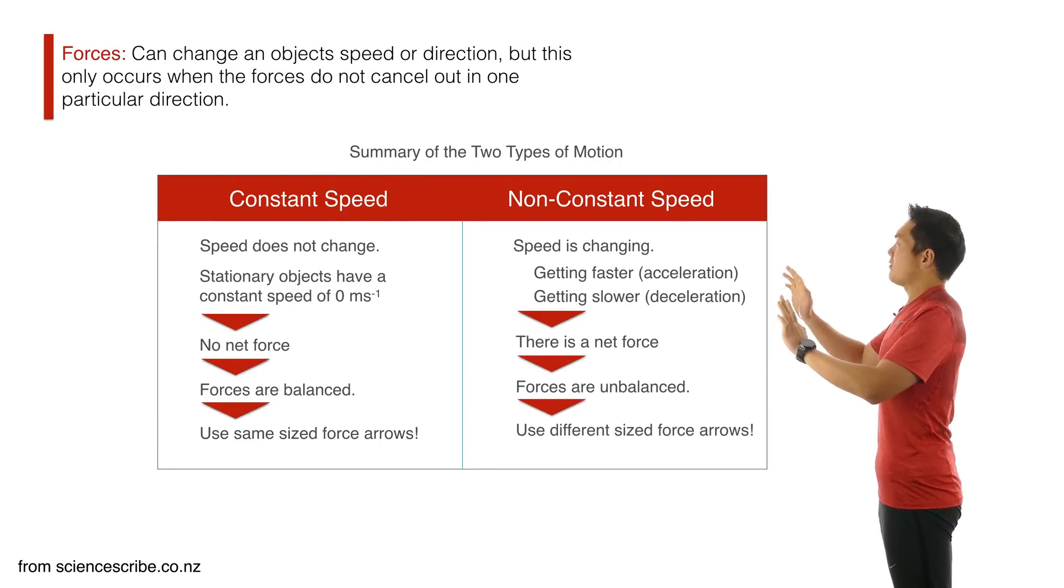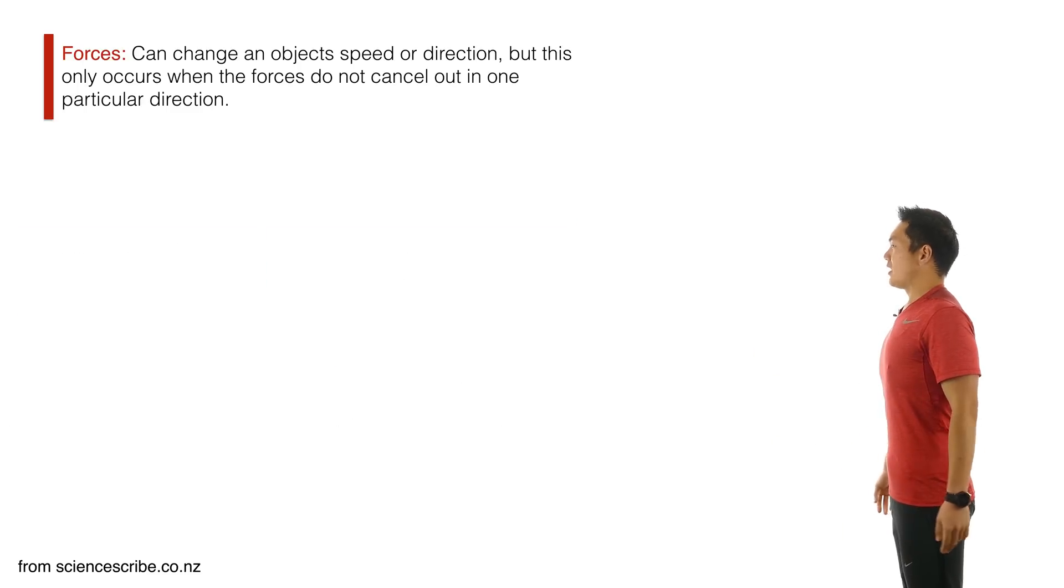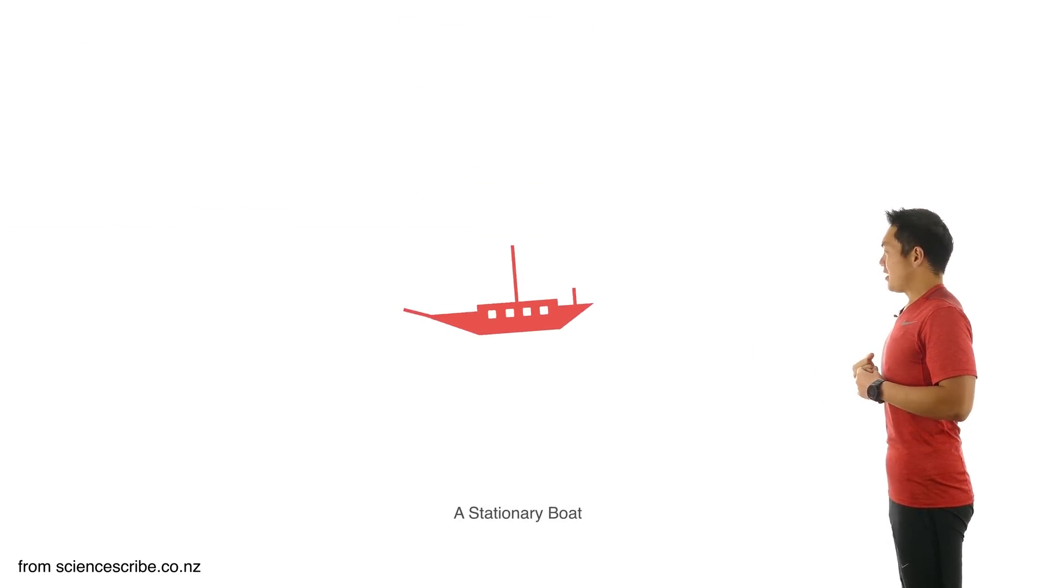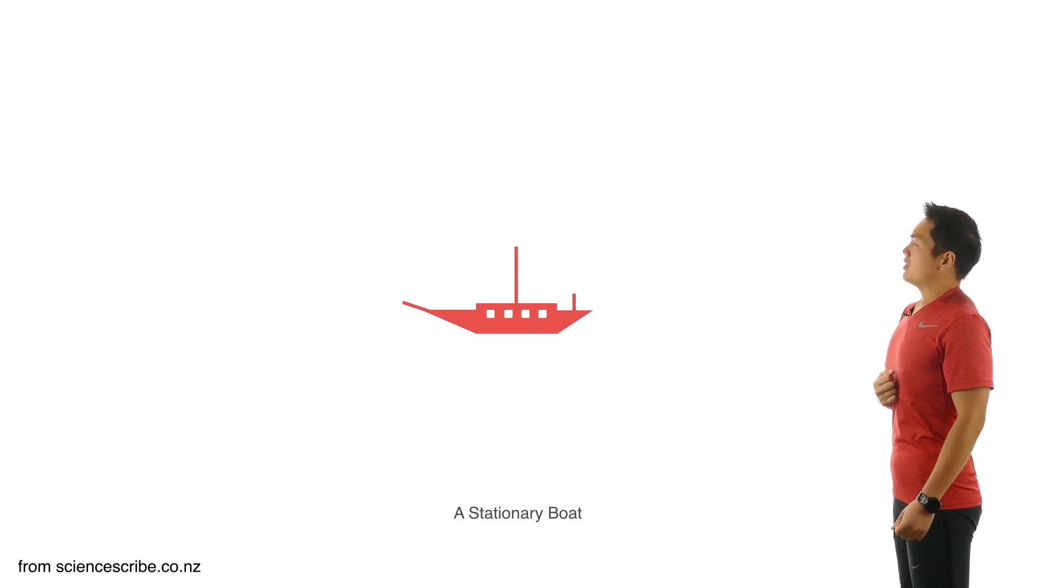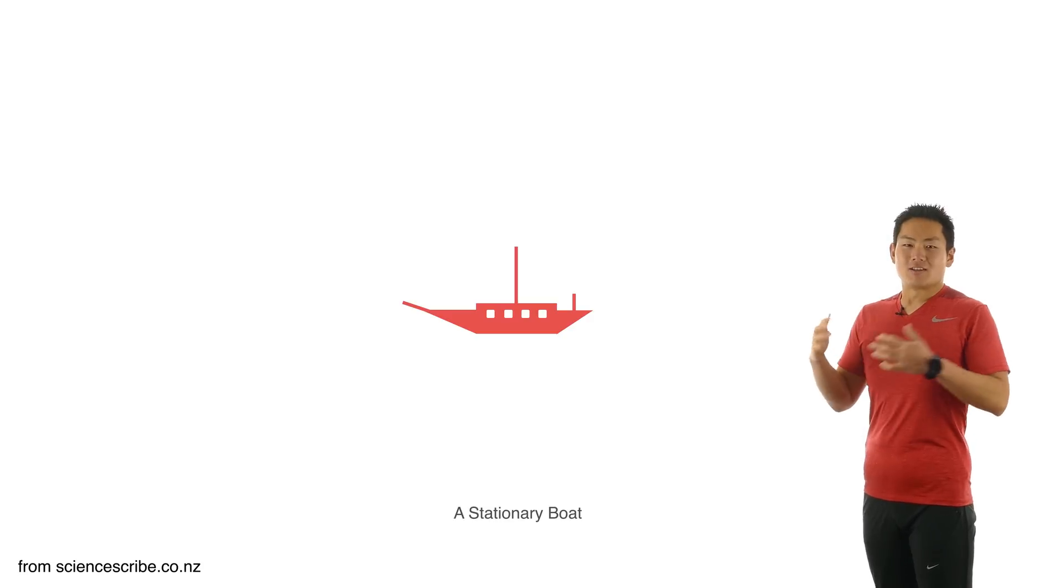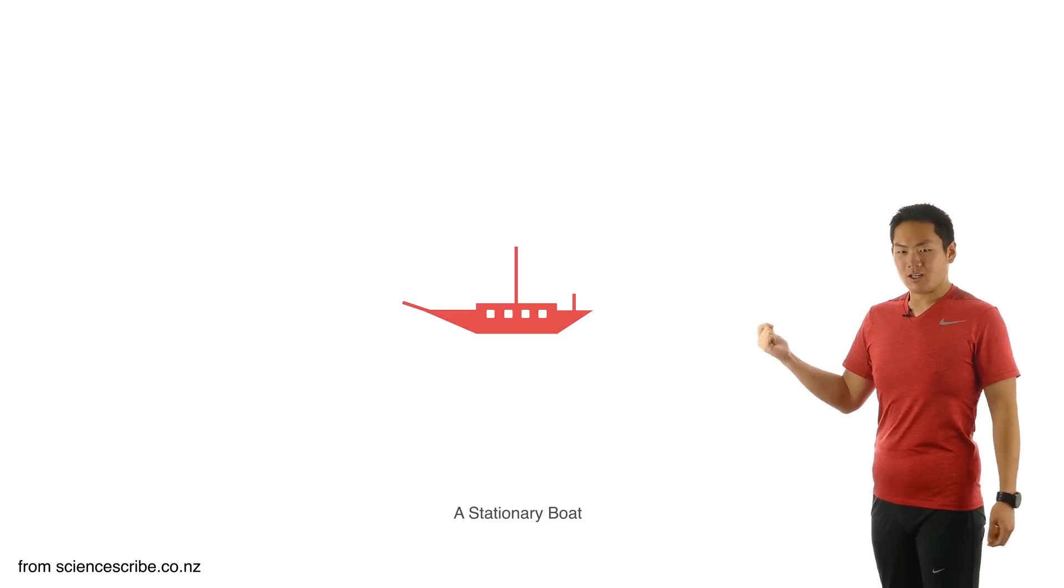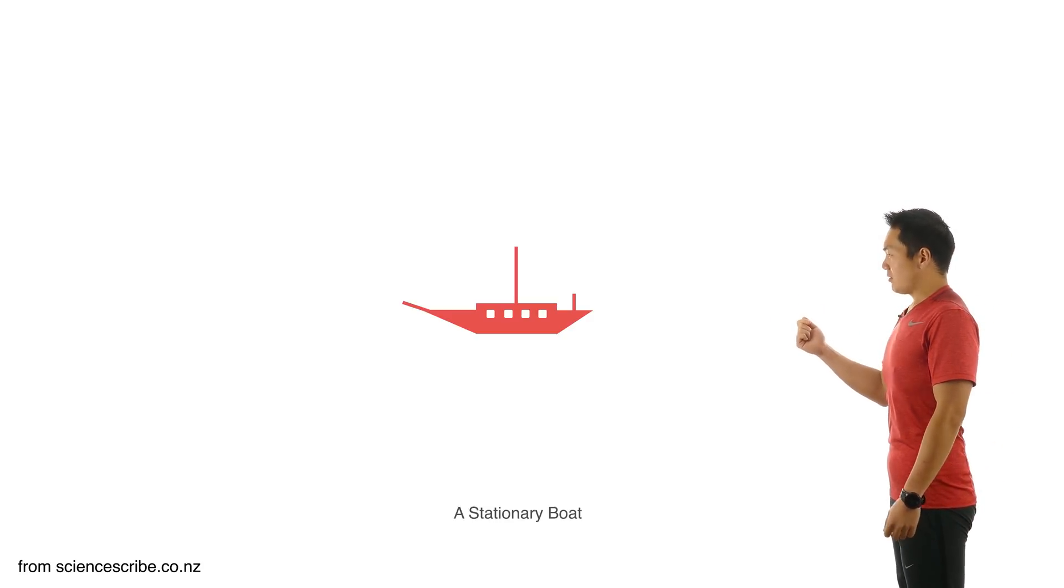We're going to keep a mental note of this table and put it over to the side for now. And we're going to do an example of force diagrams by looking at this little boat. It is a boat that is just floating happily in the water, and it is not going anywhere, so stationary. It is a stationary boat, and let's go ahead and put some force arrows on it.